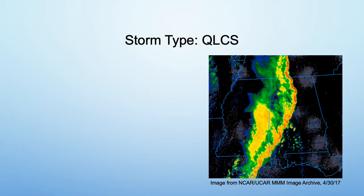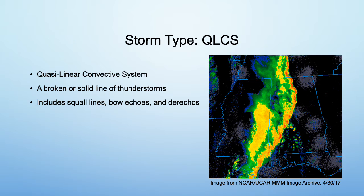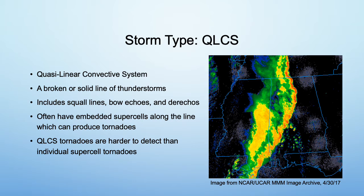The next parent storm type is the QLCS, which stands for Quasi-Linear Convective System. A QLCS is a broken or solid line of thunderstorms, which includes squall lines, bow echoes, and derechos, as well as something called a line echo wave pattern, which is basically a wavy line like towards the top of this picture. There are often embedded supercells along the line which can produce tornadoes. QLCS tornadoes are harder to detect than individual supercell tornadoes because they like to hide in the line. They usually form at any kinks in the line, and the rotation can be better detected by looking at a velocity product.